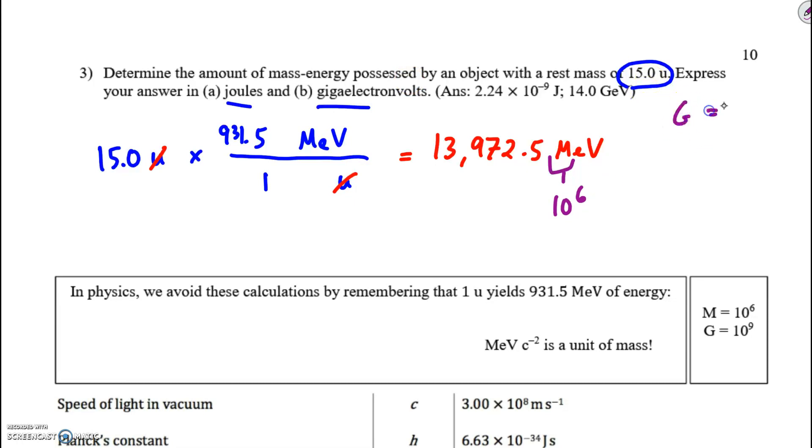Mega is 10 to the 6. They want me to convert to, to express the answer in gigaelectronvolts. Giga is 10 to the 9. So I need to take away 10 to the 6, and I need to take away 10 to the 3, and replace it, replace that 10 to the 9 with a giga. I'm going to remove those powers of 10, and I'll have 13.97 times 10 to the 9 electronvolts, and I'm going to replace the 10 to the 9 with giga.